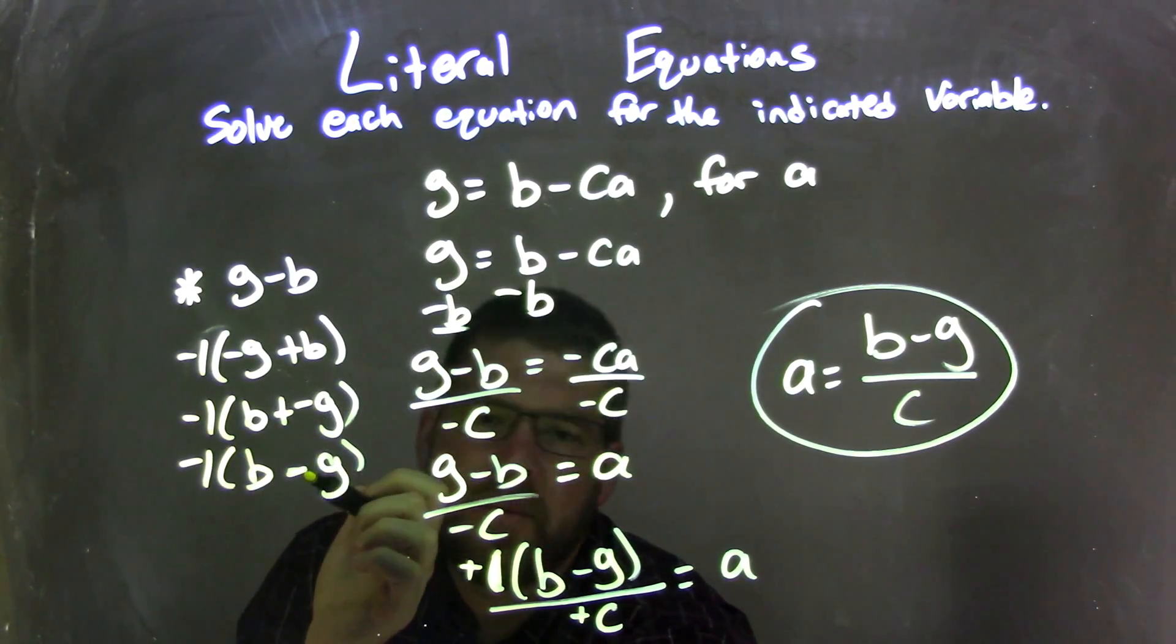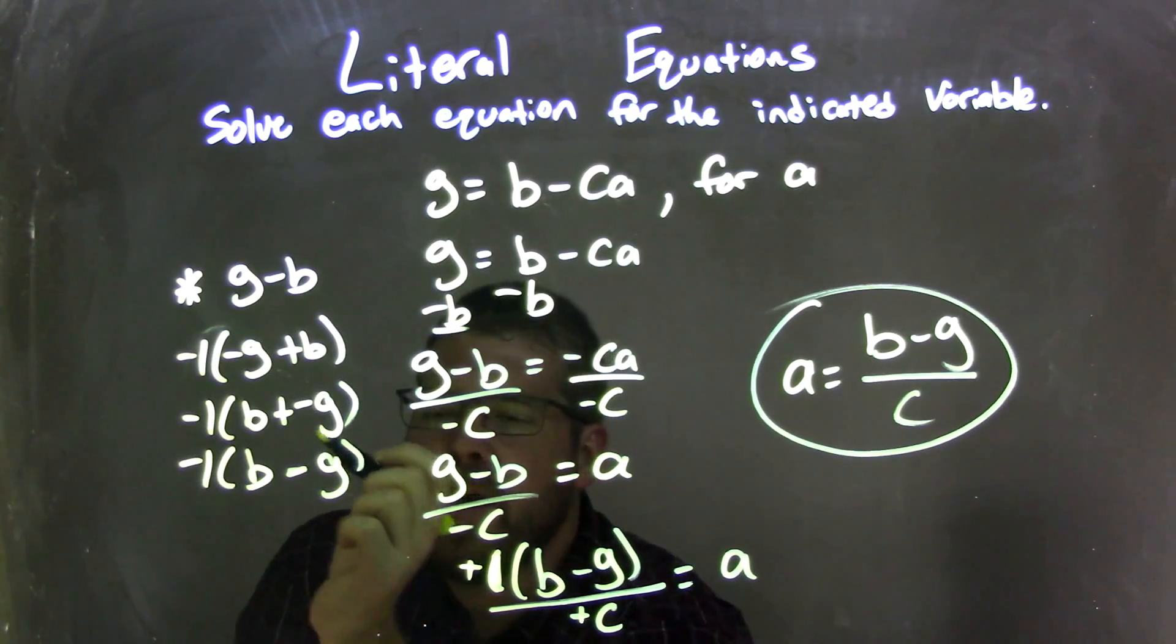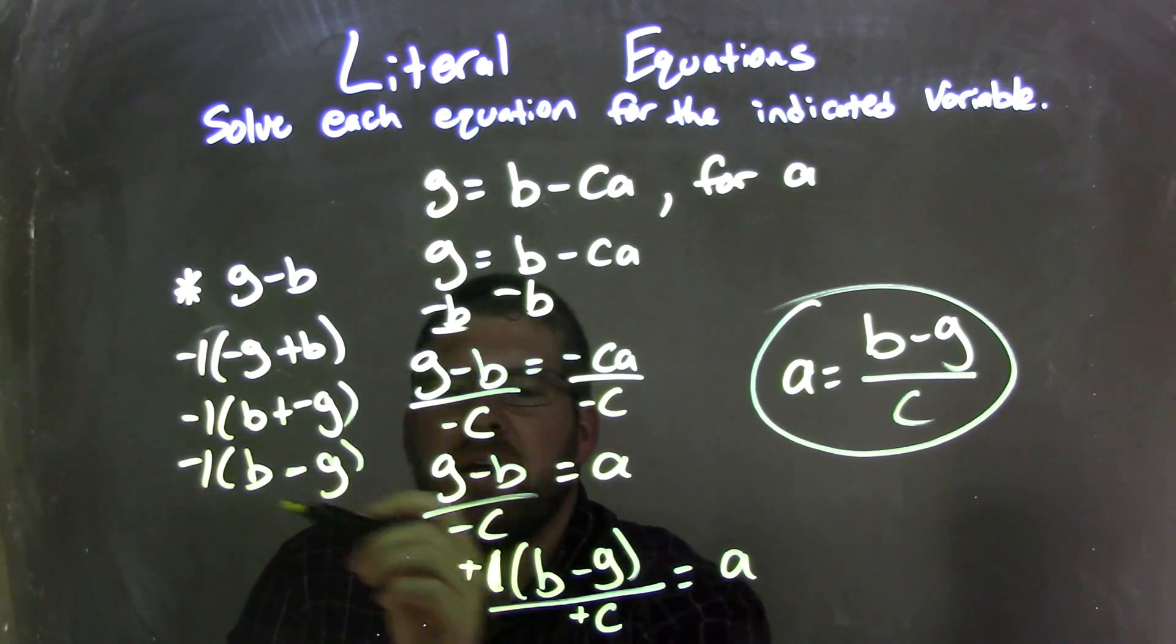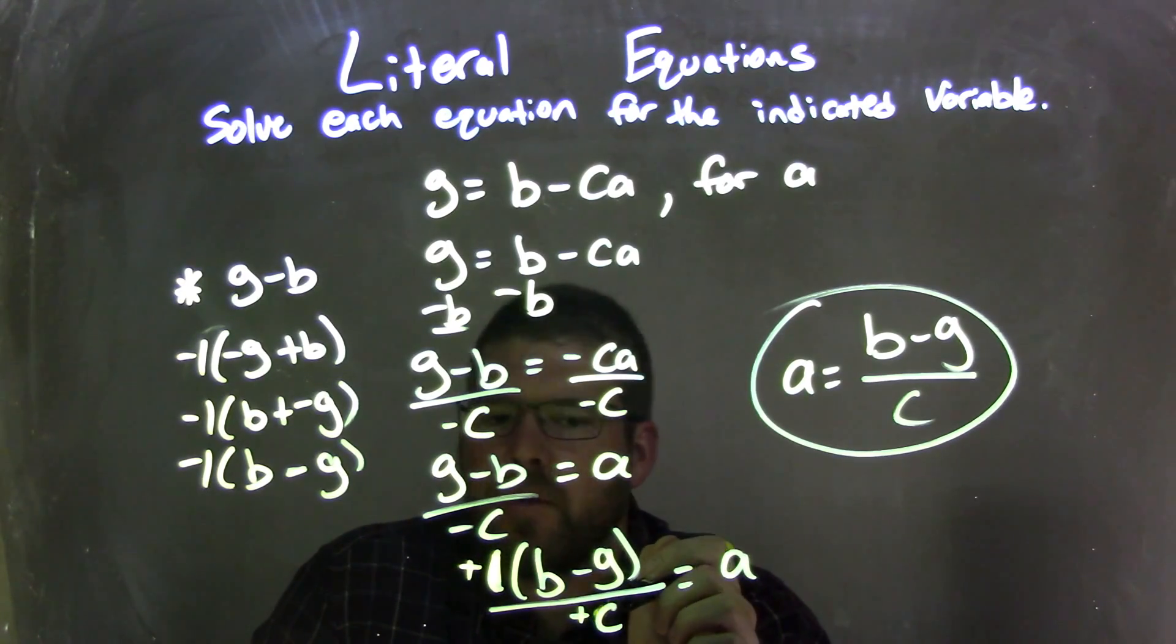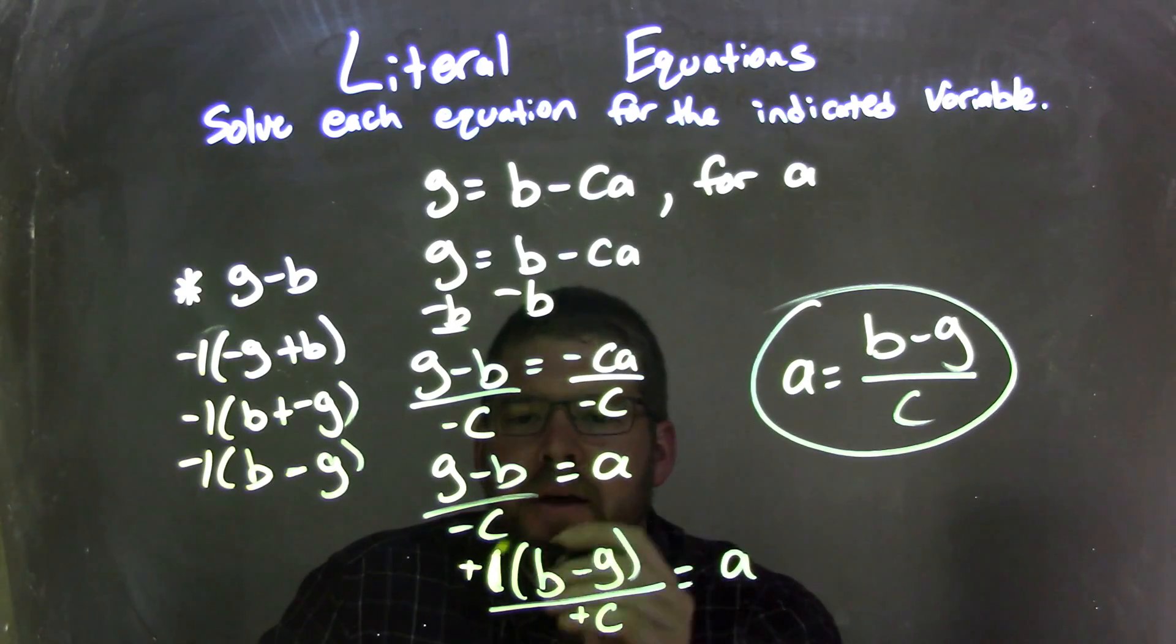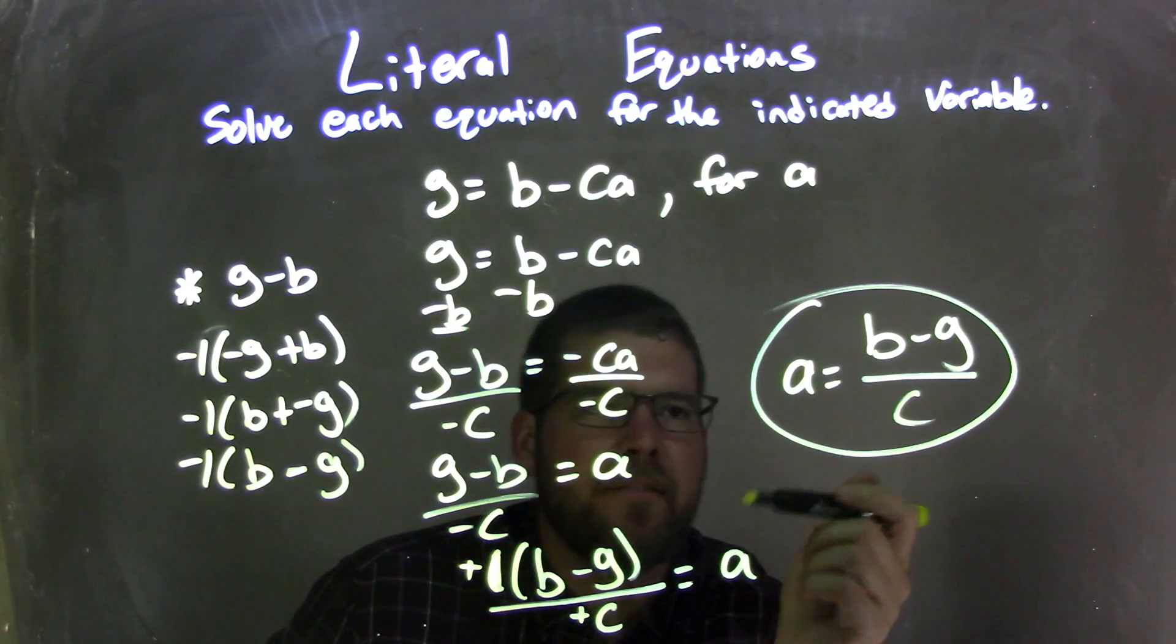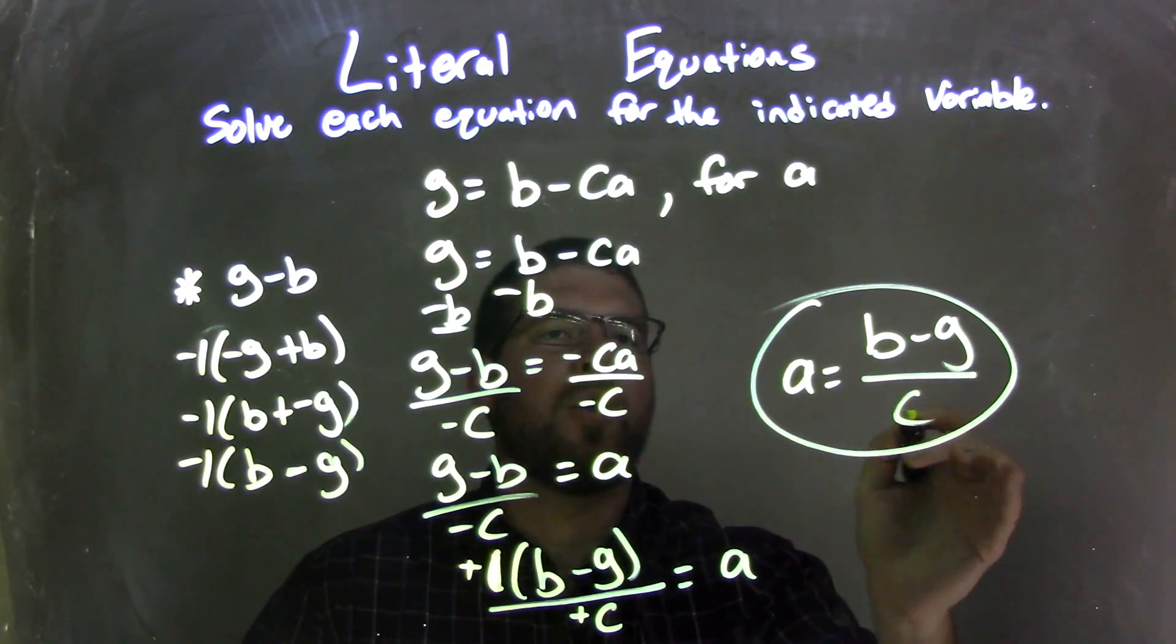Then adding a negative is the same thing as subtracting. So I have negative one times B minus G on the inside, and what that does is help me eliminate the negative one on the outside with the negative by the C in the denominator, making them both positive. So now I'm left with my final answer here. A equals B minus G all over positive C.